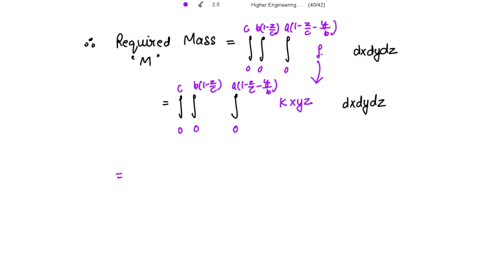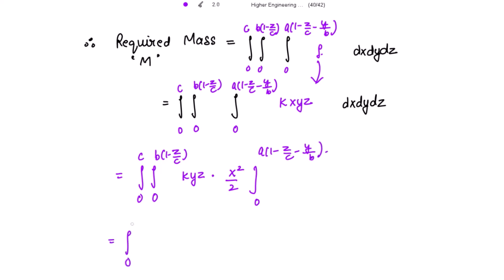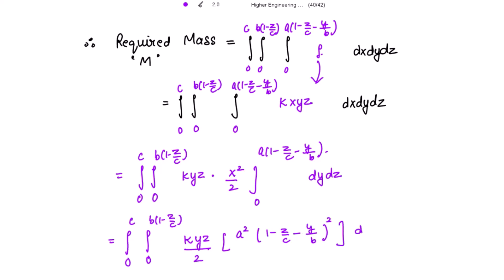Integrating with respect to x first, treating y and z as constants, gives k y z times x squared over 2 evaluated from 0 to a(1 minus z/c minus y/b). Substituting the upper limit yields k y z over 2 times a squared times (1 minus z/c minus y/b) squared d y d z.